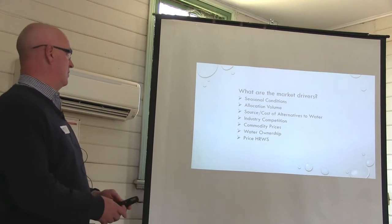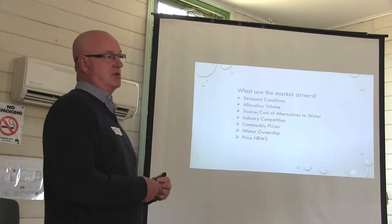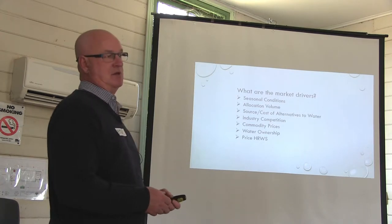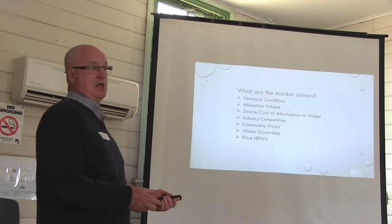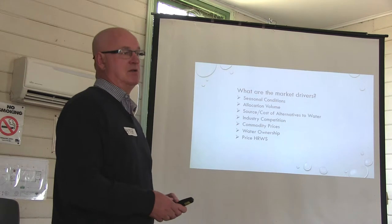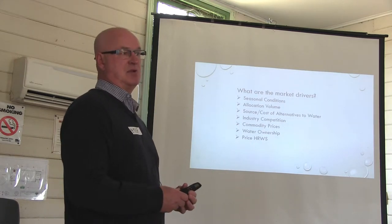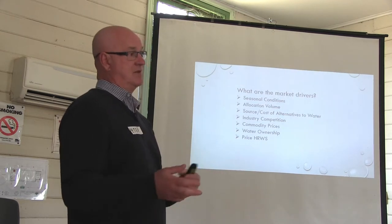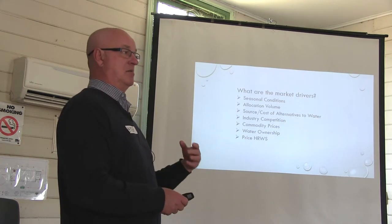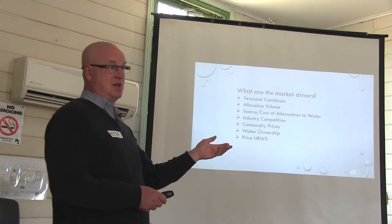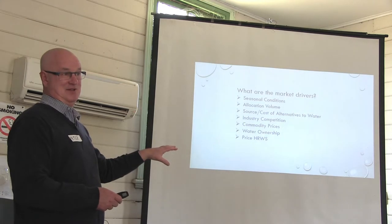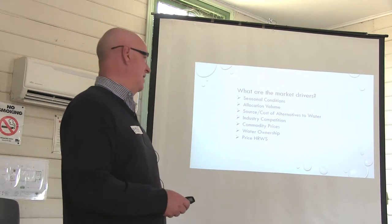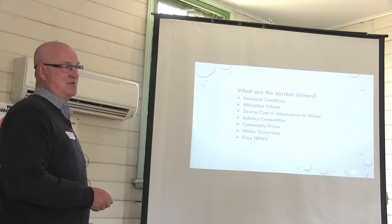The price of high reliability water share can drive the market to some degree. The lease product is based on the price of high reliability water share - generally six percent of the market. At around $3,200 for Goulburn water, you're talking about a $200 lease price. Lease has been a good option for a lot of customers this year to secure water. The problem is when the allocation market is at $330, lease products won't be offered at $200 - they'll go into the market as allocation. So lease supply dries up. But all factors below seasonal conditions ultimately come back to that common denominator.